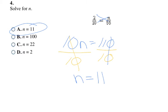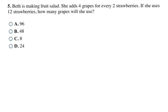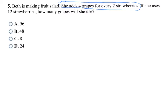Now we have a word problem where we write and solve the proportion. Beth is making fruit salad — she adds four grapes for every two strawberries. If she uses 14 strawberries, how many grapes will she use? The sentence comparing two numbers is 'four grapes for every two strawberries,' so my first ratio is four grapes over two strawberries.